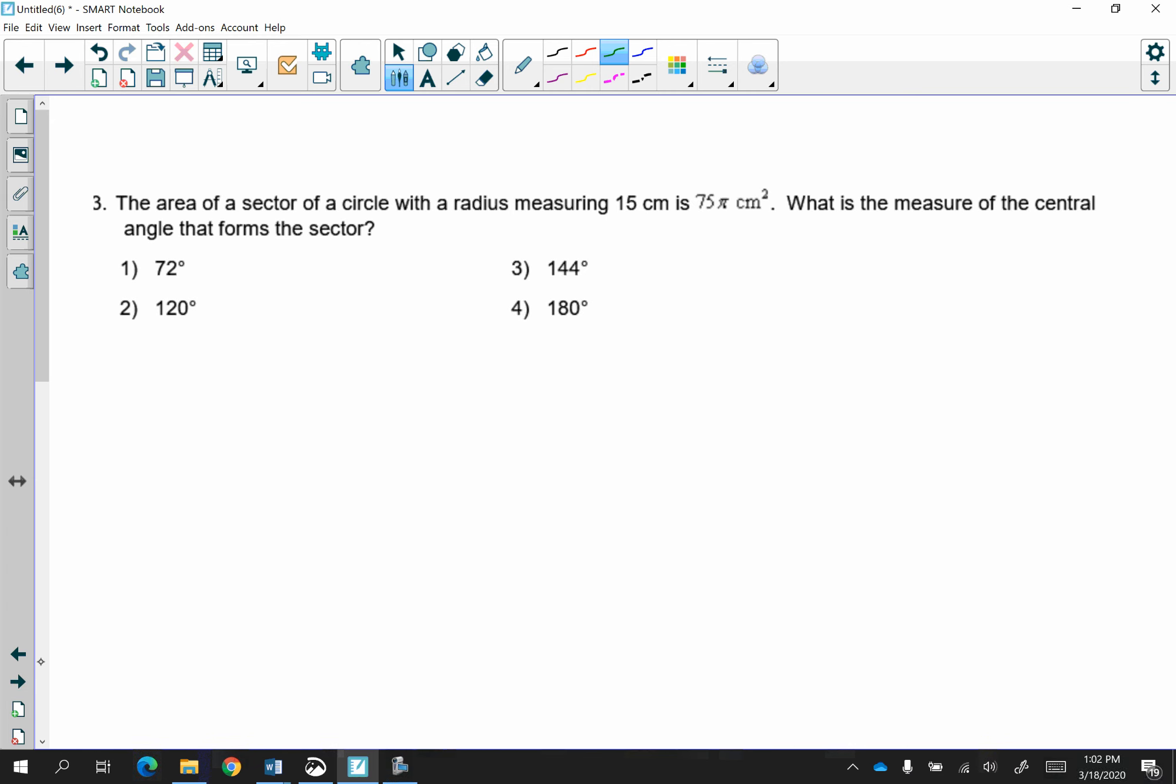I'm going to take a look at question 3. Question 3 says, the area of a sector of a circle with radius measuring 15 centimeters is 75 pi centimeters squared. What is the measure of the central angle that forms the sector? So here we go. The area of a sector, okay, the radius is 15, and we're given the area of the sector. It says, what is the measure of the central angle that forms the sector? Even though this is in pi, but if you look at all your choices, they're in degrees.